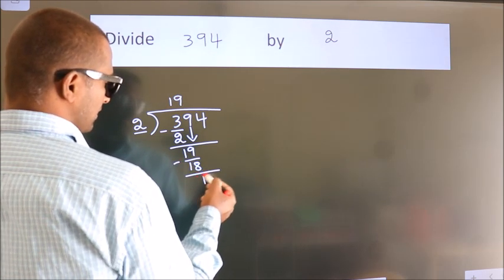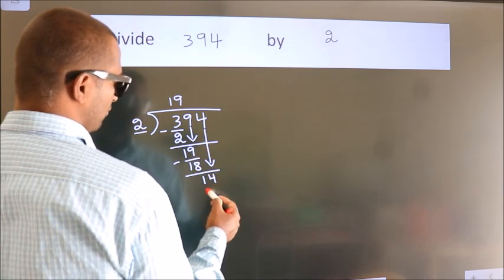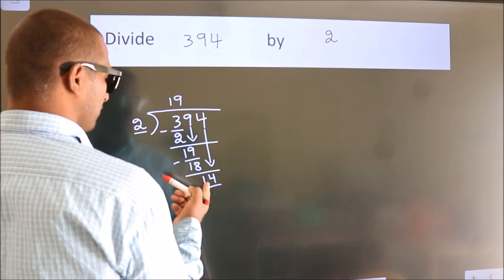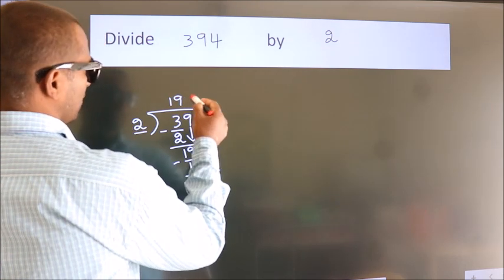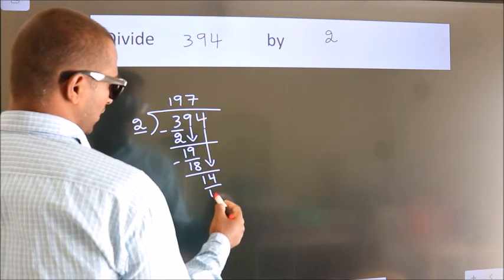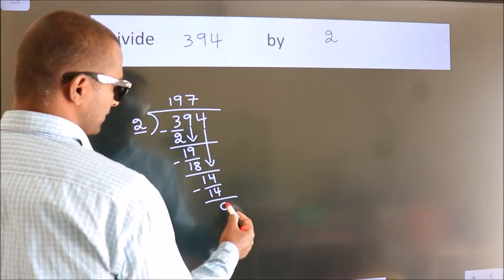After this, bring down the beside number. So 4 down, so 14. When do we get 14? In 2 table. 2 7s, 14. Now we subtract. We get 0.